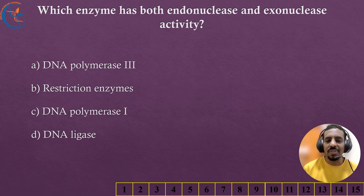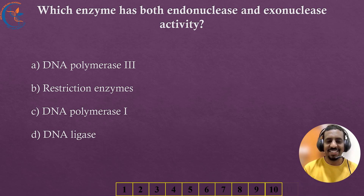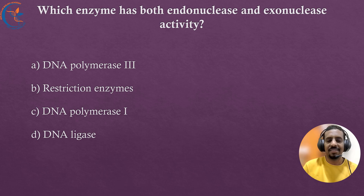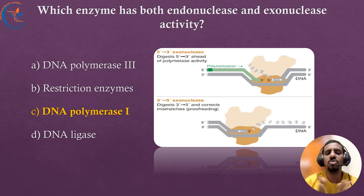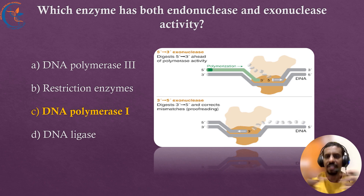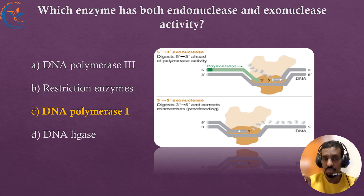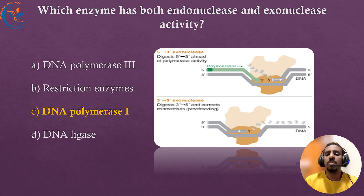The next question: which enzyme has both endonuclease and exonuclease activity? The correct answer is DNA polymerase I. DNA polymerase I has 5' to 3' exonuclease activity for removing RNA primers and 3' to 5' exonuclease activity for proofreading. Additionally, it has endonuclease activity that enables it to make internal cuts in the DNA strand when needed for repair, helping maintain genome stability.